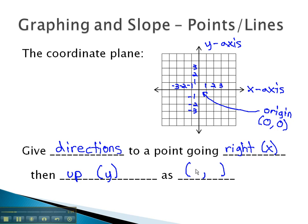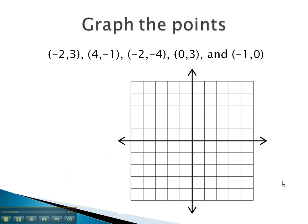And we give these directions as a coordinate pair (x, y), the first number telling us how far to go right, and the second number, how far to go up.